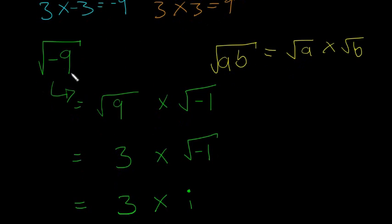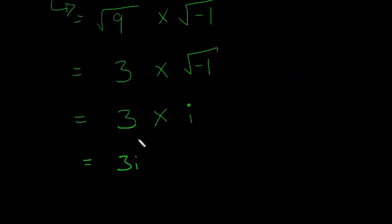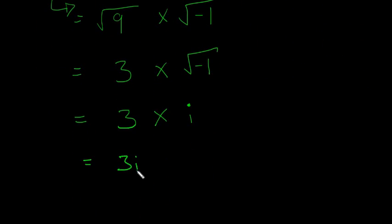So if you put that into your calculator, the square root of minus 9, you're going to get an error. But now you know how to work it out for yourself. So it's always the same thing. You just do the square root of one thing by the square root of minus 1. So if you get a minus square root, it's equal to 3i.